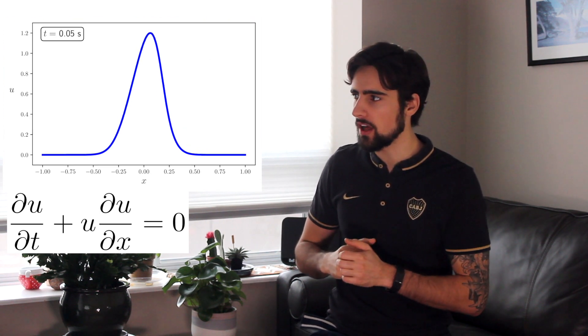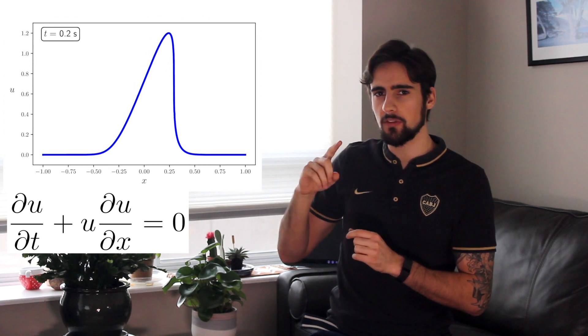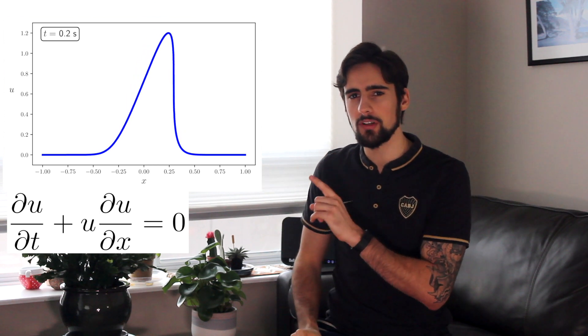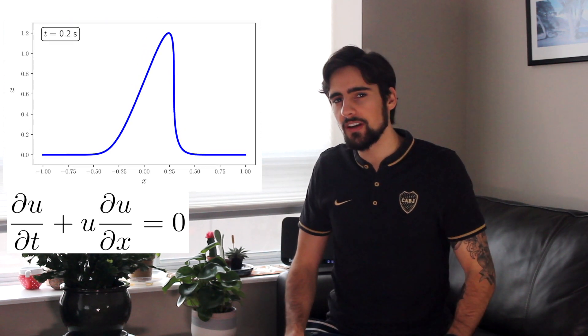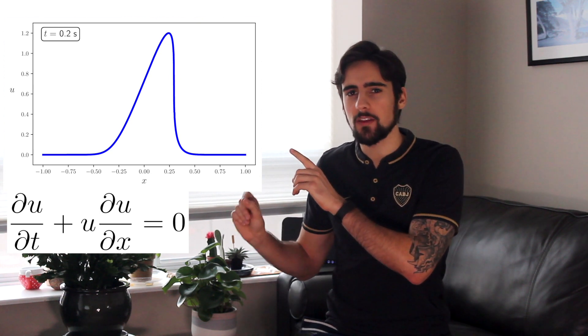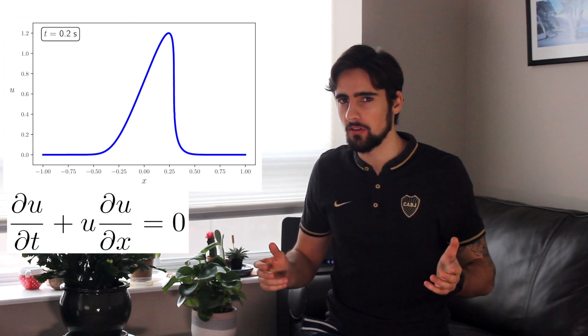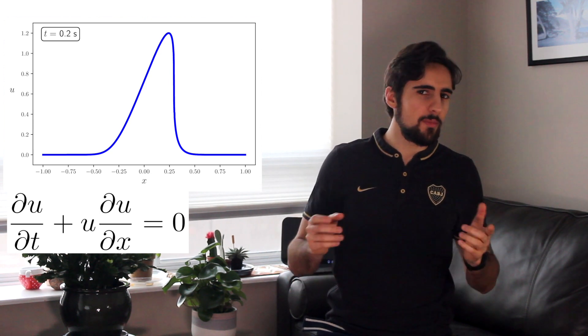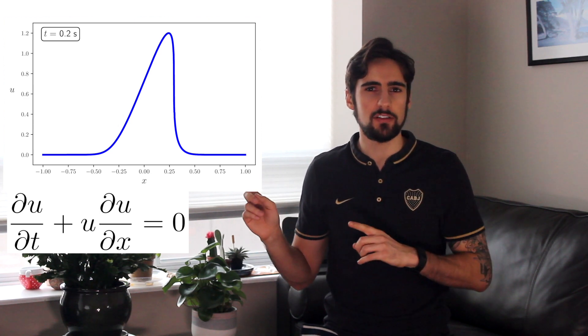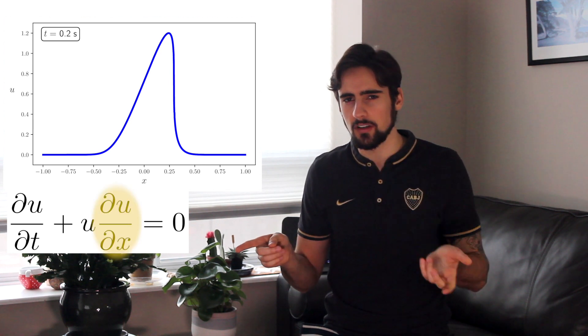And if we let this simulation run, we find something very strange. The top part of the wave overtakes the bottom part of the wave since it's moving faster. But around 0.2 seconds, we run into a very difficult problem. You'll notice that the top part of the wave has overtaken the bottom part of the wave so much so that the wave is now vertical. And we all know from our elementary calculus class that you can't take a derivative of a vertical function.